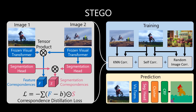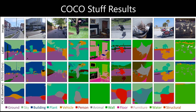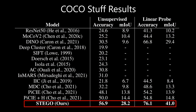We evaluate Stego on several existing datasets in the literature. The first, COCO Stuff, contains natural images and 27 different classes of objects. The previous state-of-the-art, Pisces, is able to get the rough gist of these images but is unable to resolve fine-grained structure in cluttered scenes. In contrast, Stego performs well in cluttered scenes and accurately classifies many of the different objects in this collection. These improved qualitative results also yield a considerable increase in quantitative metrics — Stego nearly doubles mean intersection over union in both an unsupervised Hungarian matching-style evaluation as well as linear probe transfer learning.